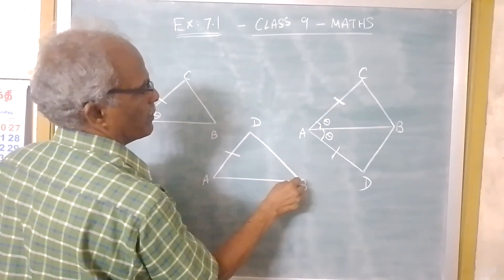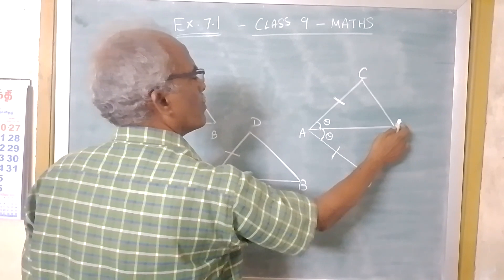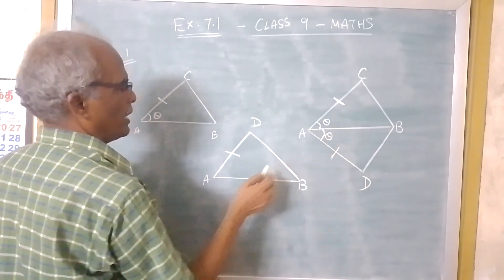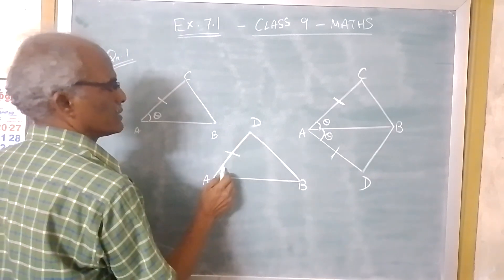Then we have BD. So this angle BAD, this angle is theta.